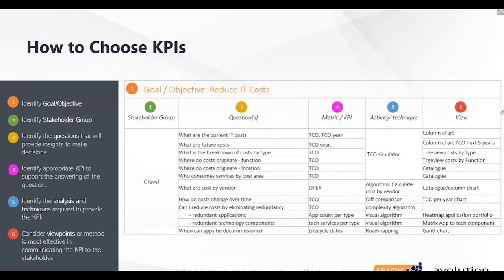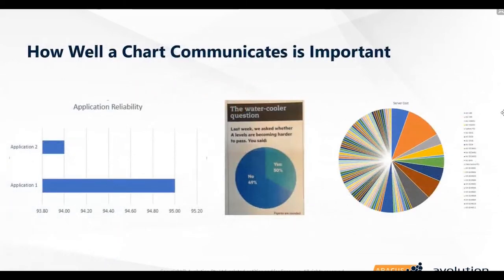We have to choose the right chart. There are various misleading charts out there — looking at something like an application's reliability, it might look significantly more reliable across one application, but really if we look at the data it only jumps from 94 to 95%. So a percent is significant, but certainly not as misleading as the chart implies. Pie charts are useful but do limit the number of data points — you really want to make this readable for users.